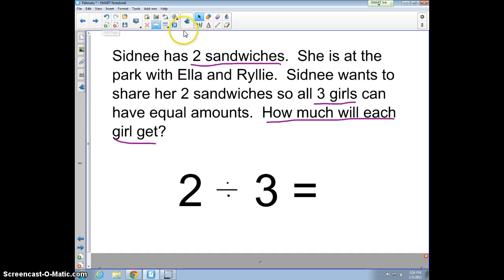So the answer here is two divided by three equals two-thirds.